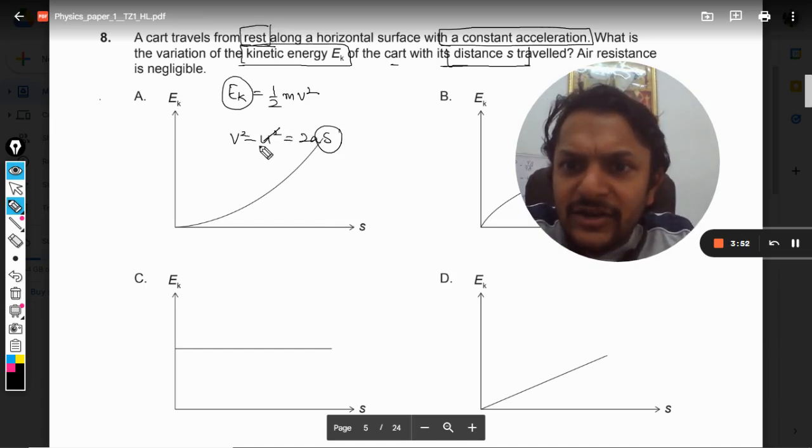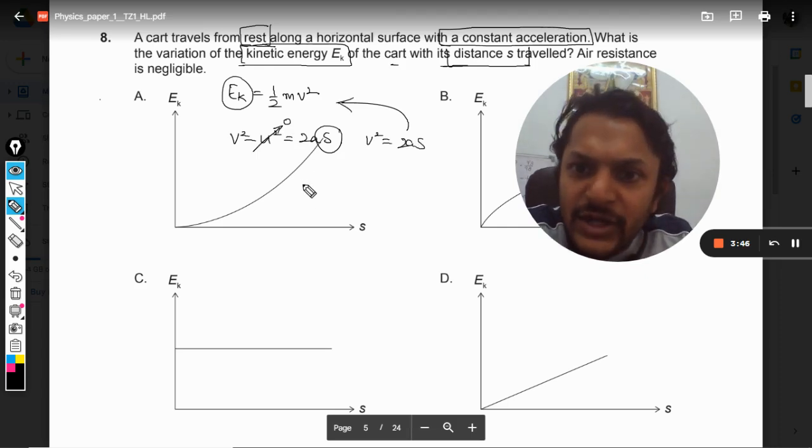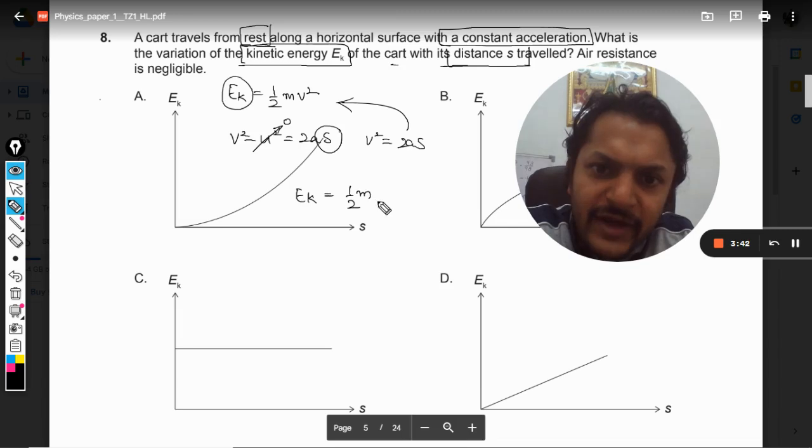Now the body is starting at rest, so u will be taken as 0. So v square can be replaced with 2as in this equation.